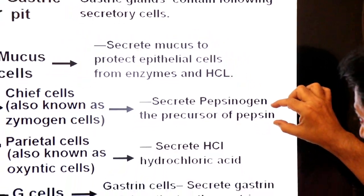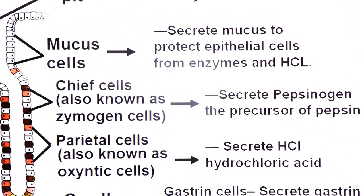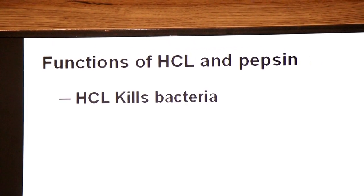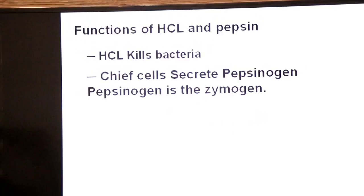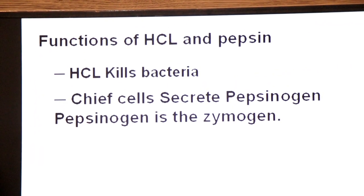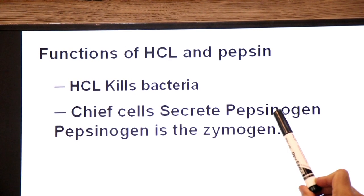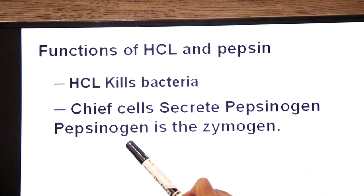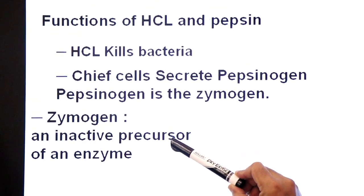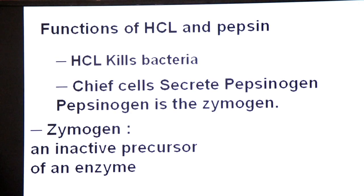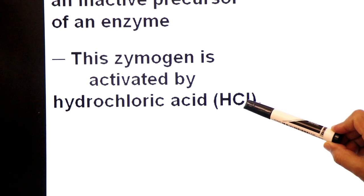Now, what are the functions of HCL and pepsin? First function of HCL: HCL kills bacteria — if bacteria enter with food, HCL kills them. Second, HCL helps convert pepsinogen into pepsin. Chief cells secrete pepsinogen — yaad rakhye ga, pepsinogen is a zymogen, meaning it is the inactive precursor of the enzyme pepsin. This zymogen is activated by hydrochloric acid, which helps convert pepsinogen into pepsin.